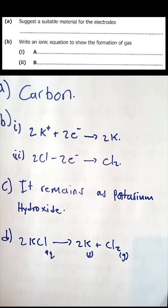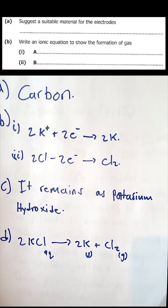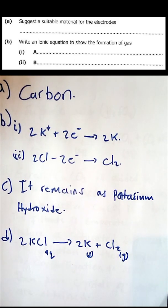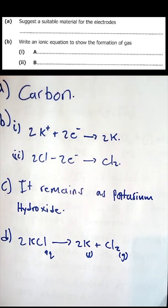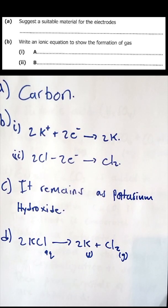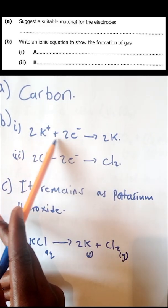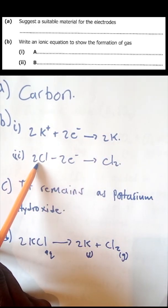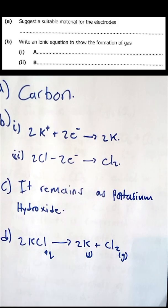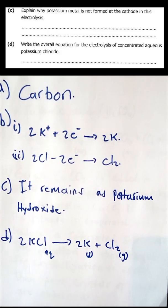Next, write an ionic equation to show the formation of a gas. Since ionic equations are written as half reactions, you can write both half reactions taking place on both electrodes. On the first electrode you have one half reaction, and on the second electrode you have the other half reaction, producing that gas.